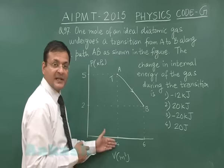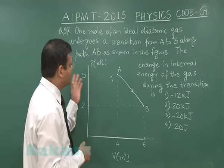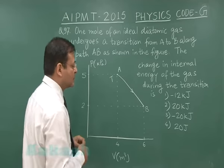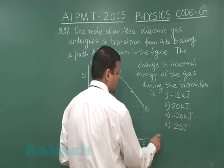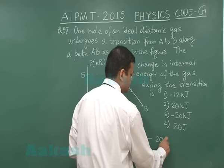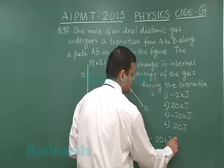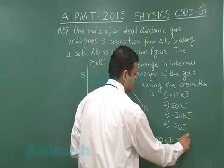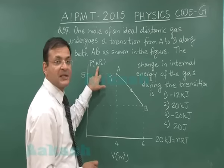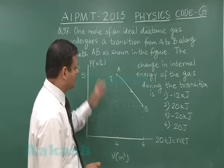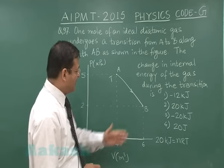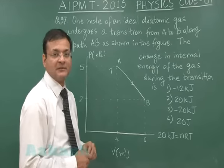Then this 5 into 4 that is P into V, 20 kilo Joule, that is equal to nRT. You can write for conversion factor that P into V, that is 20 kilo Joule, and this is equal to nRT. This is what you can choose here. Because since it is in kilo Pascal and this is meter cube so this is kilo Joule.